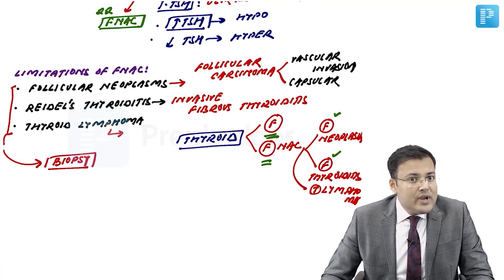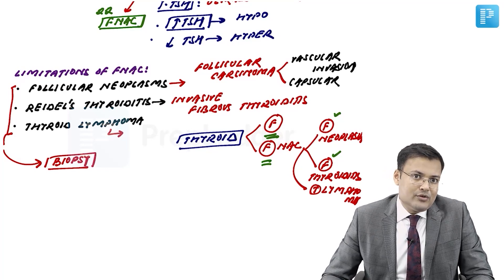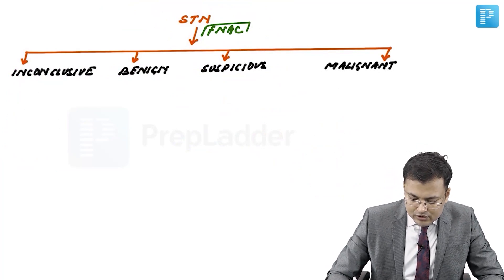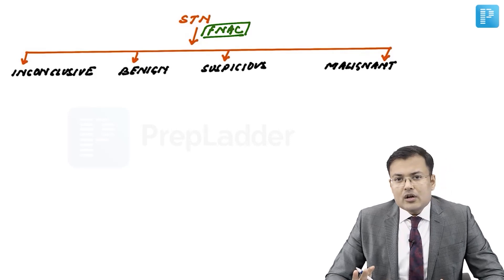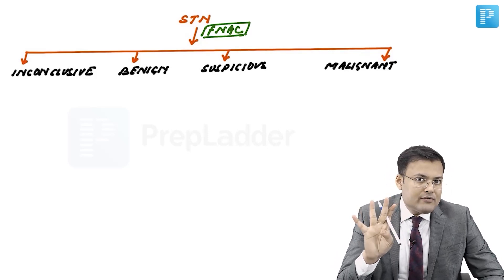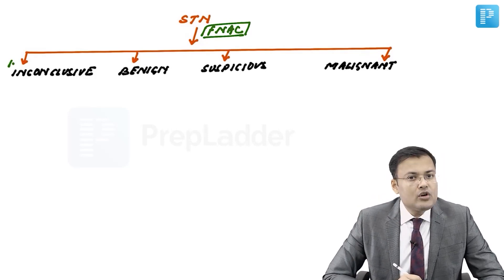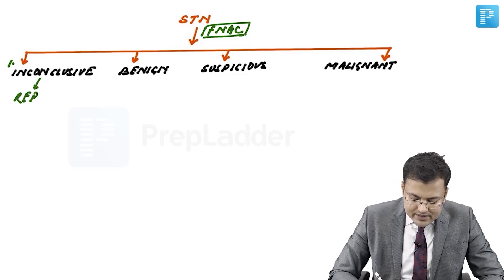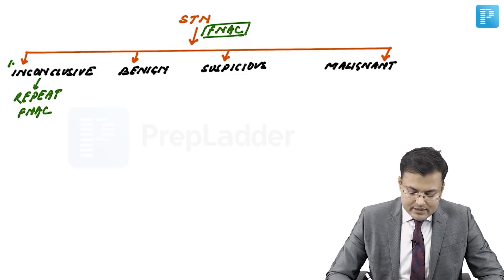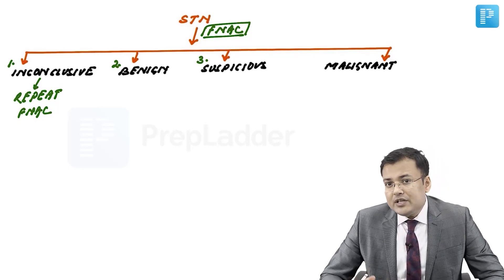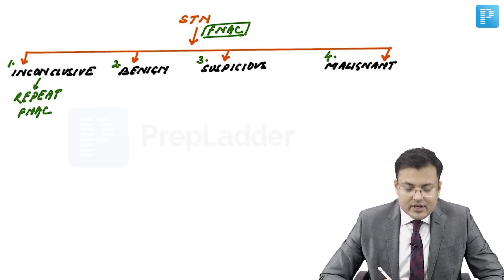Now, regarding management of solitary thyroid nodule — FNAC gives four possible results: inconclusive, benign, suspicious, or malignant. If inconclusive, we go for repeat FNAC.